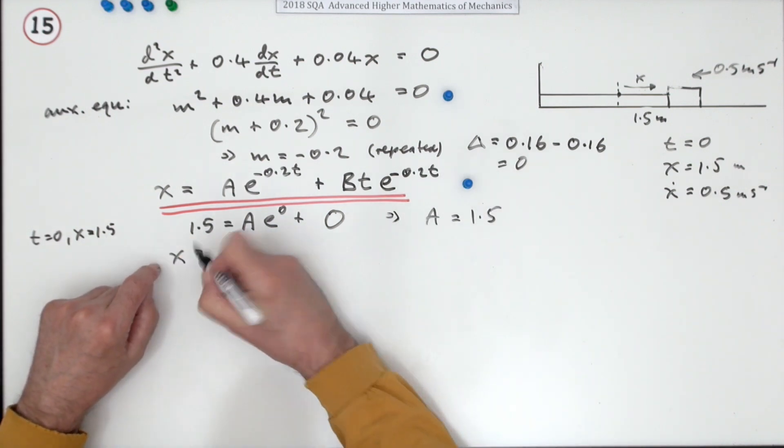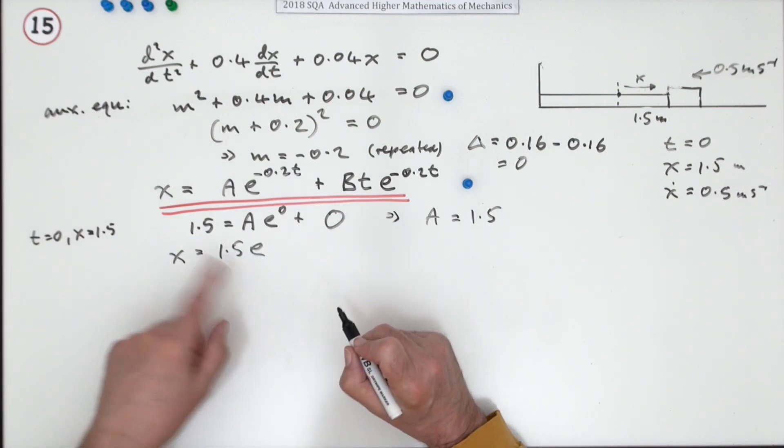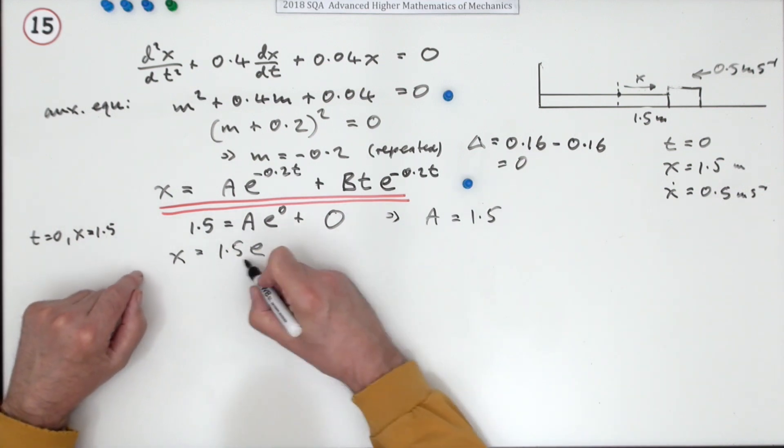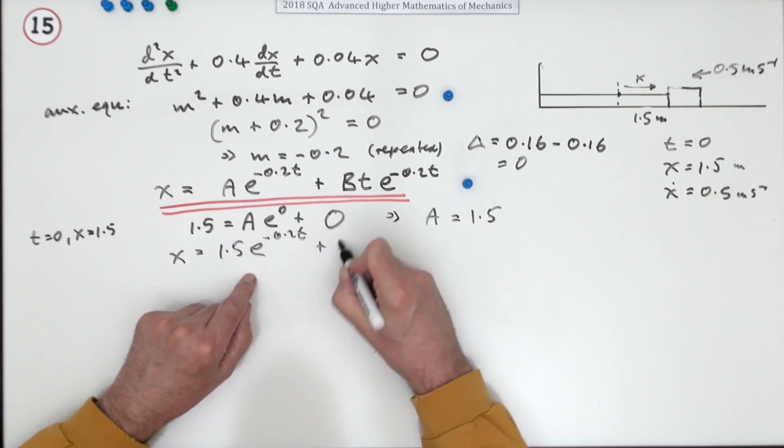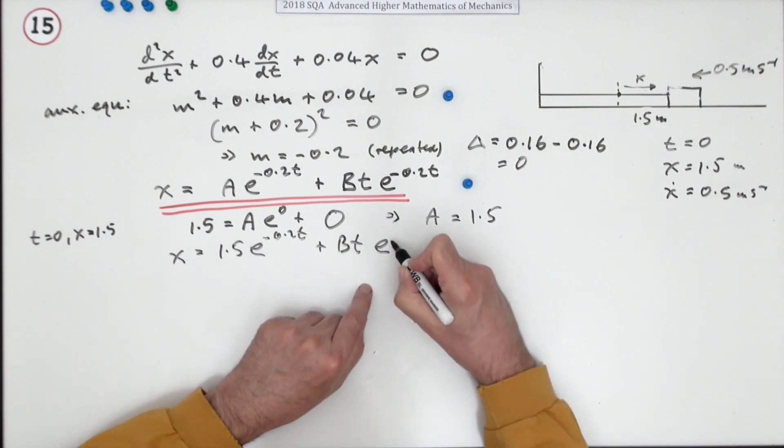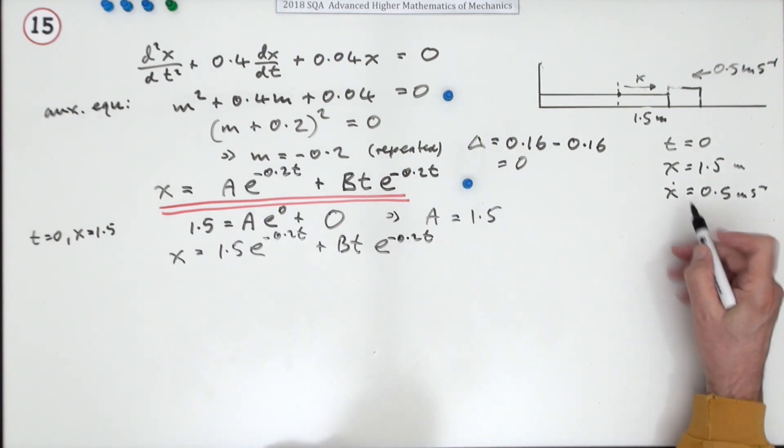So straight away, A equals 1.5. I'll just rewrite it with that. You don't need to, but I'll put it in: 1.5e to the negative 0.2t. All depends how nasty that number is, because I know I'm going to be having to write that down several times, and it's easier just to write down an A.